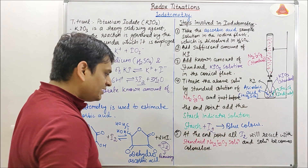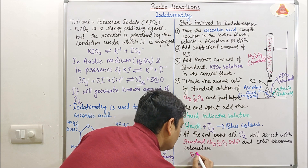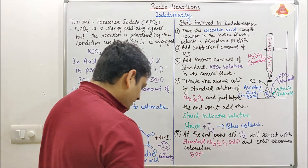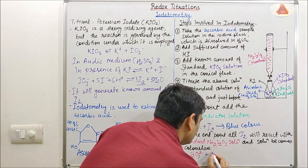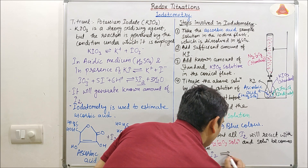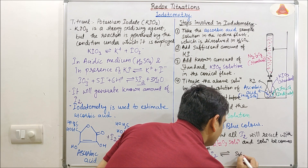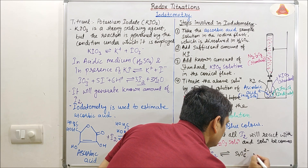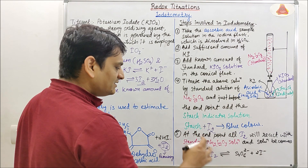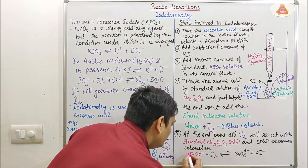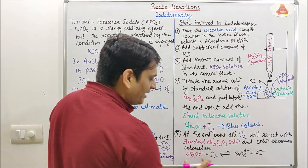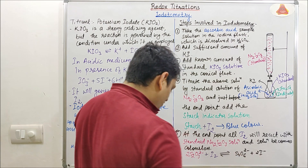At this step, S2O3 2− ions from sodium thiosulfate react with the remaining I2 and are converted to S4O6 2− plus 2I−. Balancing the equation: 2S2O3 2− plus I2 gives S4O6 2− plus 2I−. At this point all I2 is converted to 2I−.